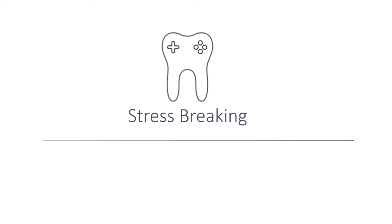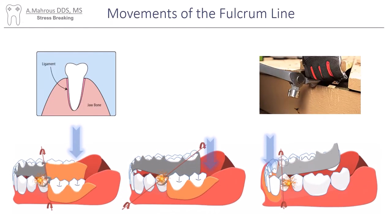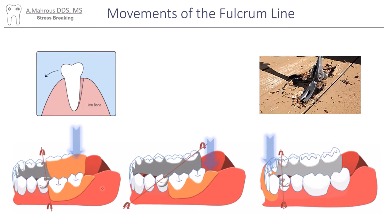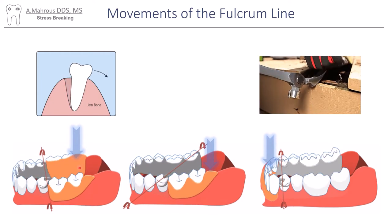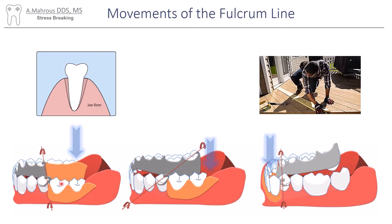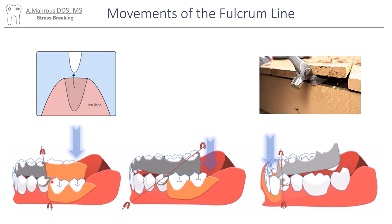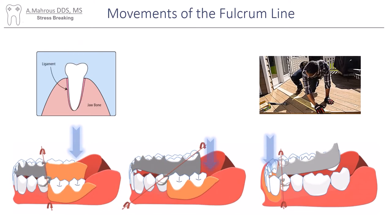Hello and welcome to another RPD video. Today we'll be talking about stress breaking. Stress breaking is needed in situations where pressure on the denture base area causes the rotation of the partial, and if the clasp does not accommodate stress breaking it might transmit harmful forces to the tooth, eventually causing avulsion.